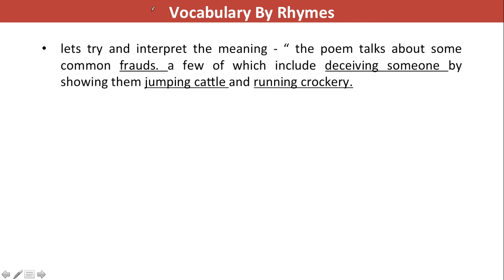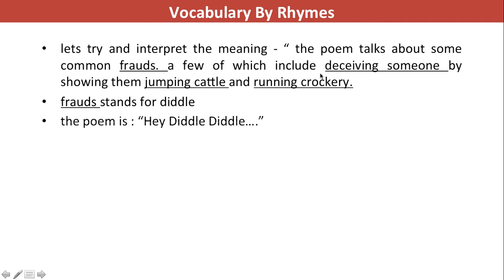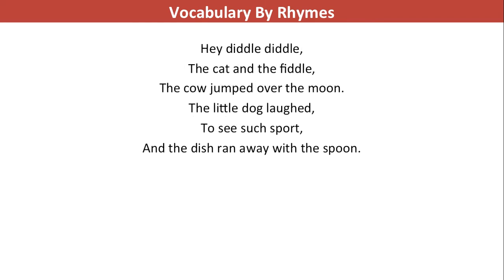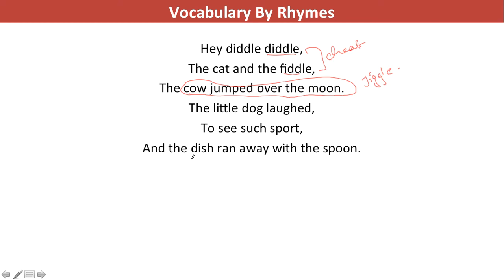It's talking about frauds, jumping cattle, and running crockery. Frauds are also known as diddle. The poem is 'Hey Diddle Diddle.' It says: 'Hey diddle diddle, the cat and the fiddle' — diddle and fiddle both mean fraud or cheating. 'The cow jumped over the moon' — the cow jumped, which relates to jiggling. 'The little dog laughed to see such sport, and the dish ran away with the spoon' — the dish and spoon are both crockeries, and they ran away — they flee. That is how this rhyme was coded.